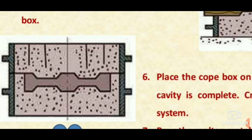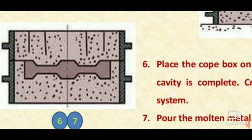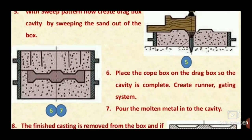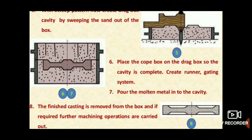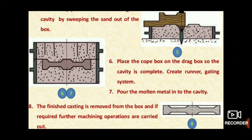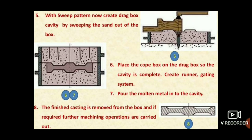Finally, the cope and drag — the top and bottom boxes — are attached together. The open bar drag box is placed so that the cavity is complete. Then a runner, gating system, and sprue are created for pouring the molten metal.